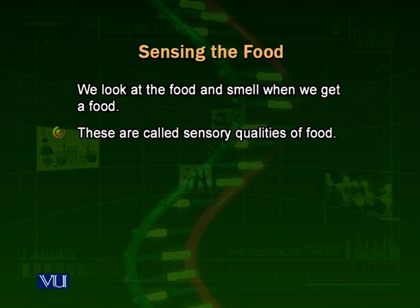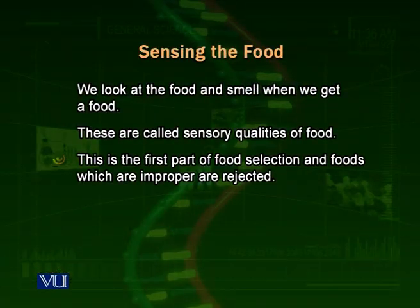We look at the food to see how it appears. We smell it — if it smells good or bad. If it smells bad, we reject it. So we look at the sensory qualities of food as the first step of food selection. If food looks improper, it is rejected and not ingested.